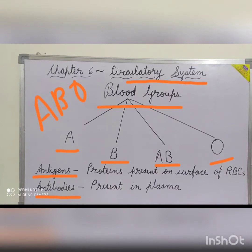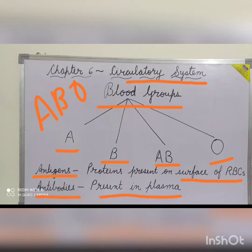Antigens are the proteins present on the surface of the RBCs and antibodies are present in plasma. Both antigens and antibodies work against each other.